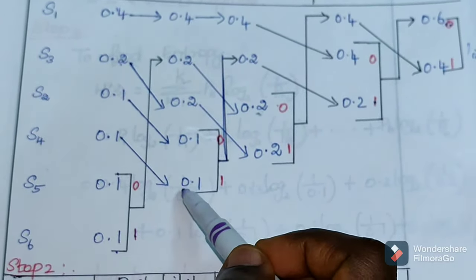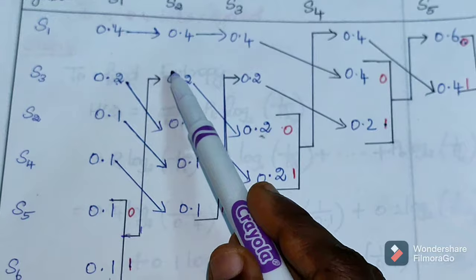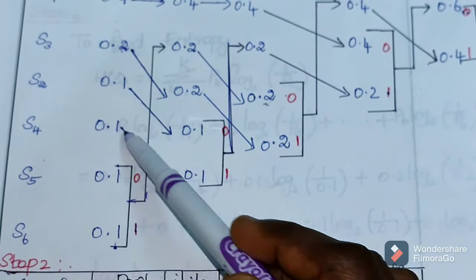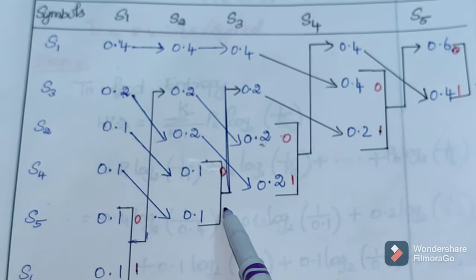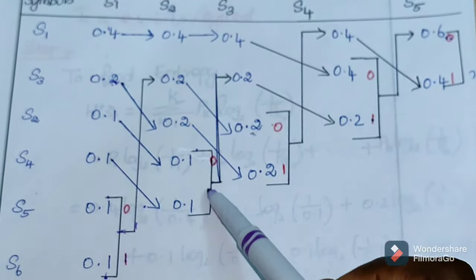Now the lowest probabilities, the last two lowest probabilities are combined. 0.1, codeword is assigned. Add the two probabilities to get 0.2. So 0.4 is first, then 0.2. Then again 0.2 is here, so we arrange them. One step downward with arrows. The arrow is very important for finding the codeword.